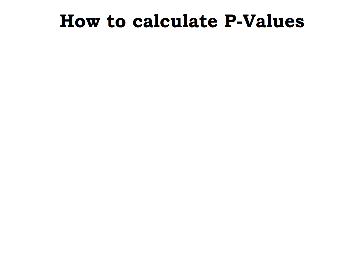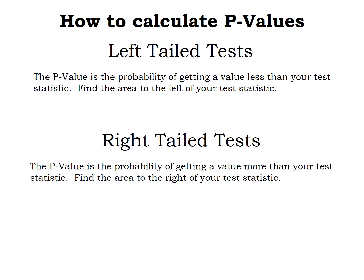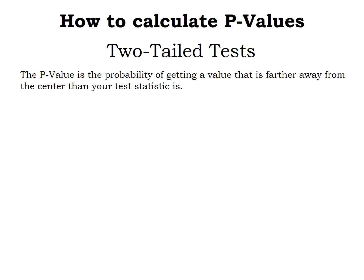When calculating your p-value, you need to know if you're doing a left, right, or two-tailed test. A left-tailed test means the p-value is the probability of getting a value that's smaller or to the left of your test statistic. A right-tailed test means the p-value is the probability of getting a value to the right or larger than your test statistic. For a two-tailed test, the p-value is the probability of being farther off-center in either direction than your test statistic.